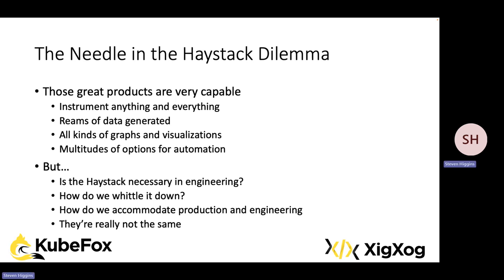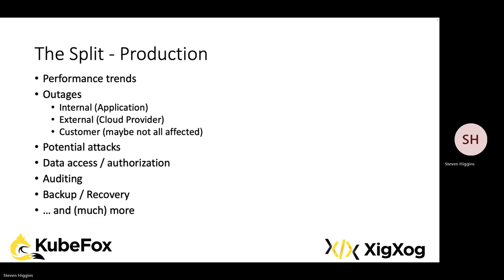The situation is complicated further by the fact that the requirements for instrumentation are really not the same in dev as they are in production. Production has extensive instrumentation requirements, of course. There are many things that we need to know in addition to what a developer would want to see. We need to understand performance at both a macro and micro level. Outages could be brick-and-mortar things like a cloud provider issue, or they could be a particular application running in a particular environment — for instance, UAT — or there could be a specific customer running a slightly different application version.